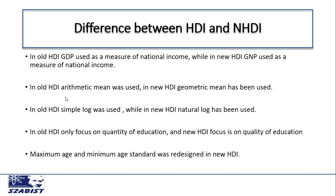The second difference between the old HDI and new HDI is that in old HDI, arithmetic mean was used for the calculation of HDI, while in new HDI, geometric mean has been used for the measurement of the Human Development Index.